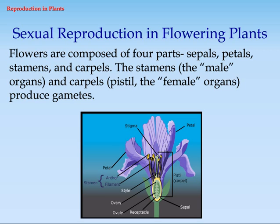Sexual Reproduction in Flowering Plants. Flowers are composed of four parts: sepals, petals, stamens, and carpels. The stamens are the male organs, and carpels are the female organs, which produce gametes.